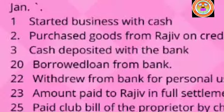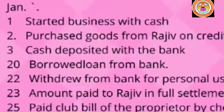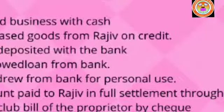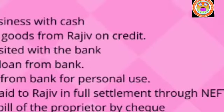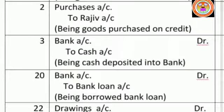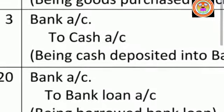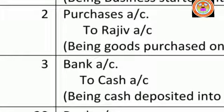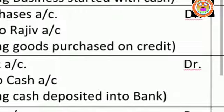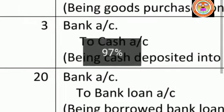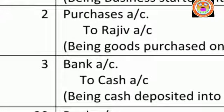Raja is purchasing goods from Rajiv, who is his supplier, on a credit basis for ₹1 lakh. When the proprietor purchases goods from suppliers on credit, we have to pay money for that, so purchases will be our expenses. Using the nominal account rule — debit all expenses and losses — we debit purchases account.